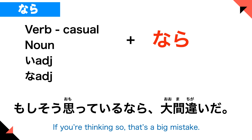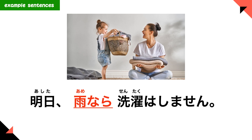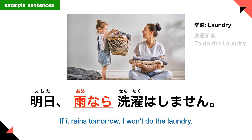Let's look at more example sentences. 'Asita ame nara, sentaku wa shimasen.' If it rains tomorrow, I wouldn't do the laundry. Sentaku means laundry, sentaku suru means to do the laundry.